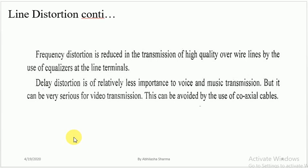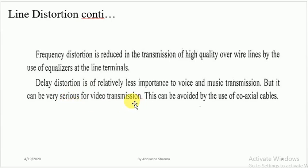Next, how to reduce these types of distortion. Frequency distortion is reduced in transmission of high-quality signals over wire lines by the use of an equalizer at the line terminal. Delay distortion is of relatively less importance to voice and music transmission, but it can be very serious for video transmission. Delay distortion can be avoided by the use of coaxial cable.